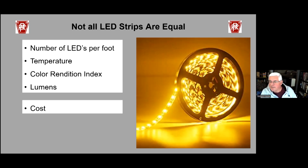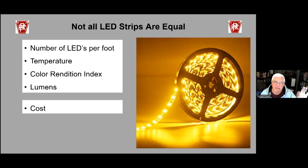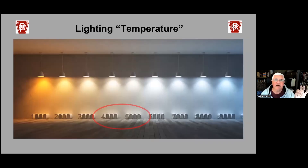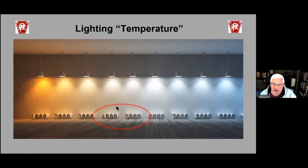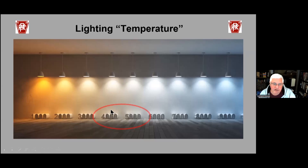Not all LED strips are equal. I laid the strip Phil recommended next to one from the big box store. The big box store's was cheaper and the specifications on paper looked better — 36 LEDs per foot and claimed to be 4000K. Let me talk about the Kelvin range: white lights are in the 4000–5000K range; sunlight is about 5000K. But 5000K LED light in a basement looks pretty harsh and a bit bluish. I went with 4000K, which is more of a white light, and it worked really well for me.